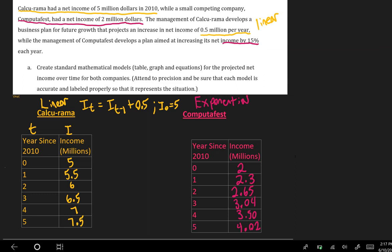On the other hand, filling in the table for Computafest, we have time and income. I was using a recursive rule i sub t equals i sub t minus 1 times 1.15 starting at 2.